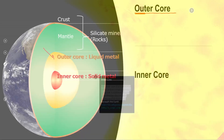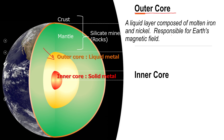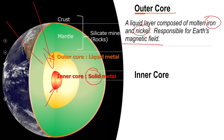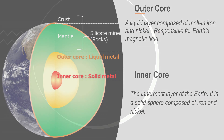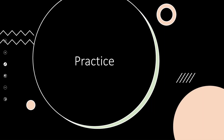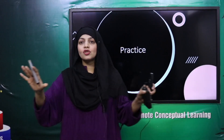The outer core is liquid and made up of iron and nickel, and it generates the magnetic field as we already know. Now going deep down to the inner core - the burning hot innermost portion - the inner core is a solid ball of nickel and iron with a radius of 1,220 kilometers. It remains solid due to the extreme pressure that exists deep beneath the earth. The inner core is extremely hot but solid because of the immense pressure above it. So outer core is liquid, inner core is solid; the outer core generates the magnetic field.